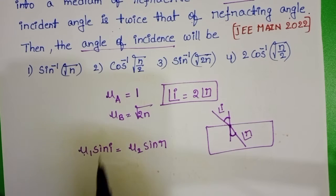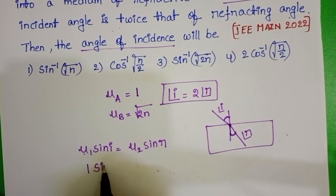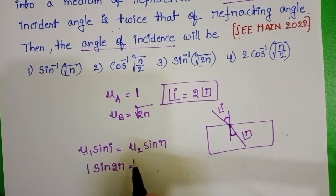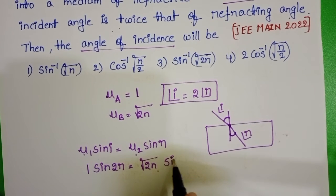In place of μ₁, take 1. Sin i, where i = 2r. And μ₂ = √(2n) sin r.